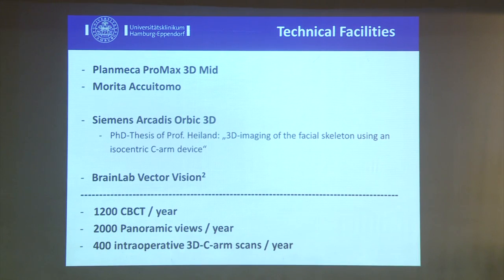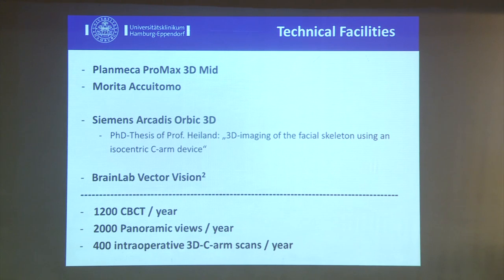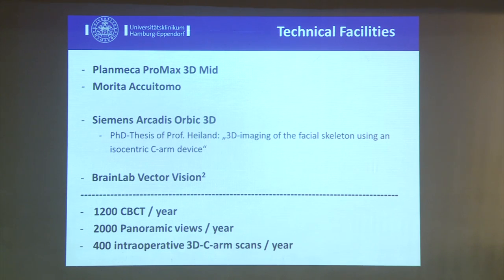We have the following technical equipment available. We have two cone beams. We started with the Morita, mainly driven by our ENT colleagues, who said it was the only device able to image the inner ear properly at the time. This is not true anymore, and support from Japan is a horror. That's why we chose a second one from Finland — from Europe — and they are much more supportive when we have any questions or problems. So this is our preferred system, and the Morita is like our dinosaur still in the outpatient area.